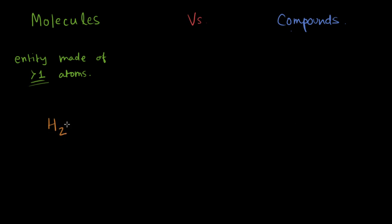H2 has two atoms, which is more than one, so it is a molecule. What about something more complex, like glucose — C6H12O6? This is also a molecule, because it has more than one atom: 6 + 12 + 6 = 24 atoms, which is clearly more than one.